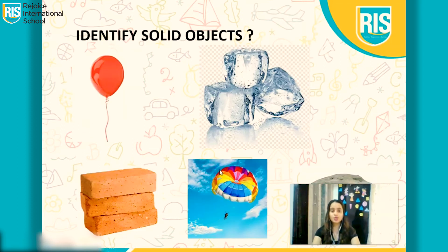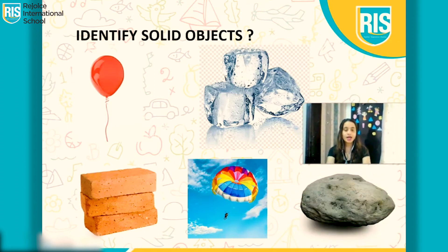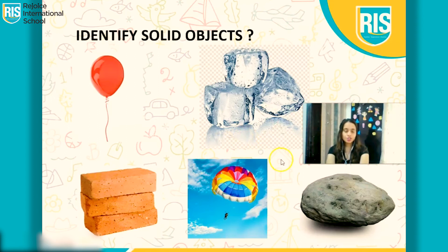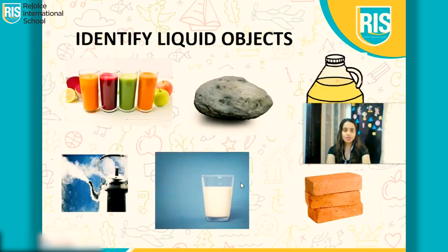Now it's your turn to identify the solid objects. I am going to give you help. It's balloon, ice, bricks, parachute, stone. Can you tell me which are the solid objects? As I told you, they are very firm and stable. They have a specific shape. You can touch and feel it. Your answer is correct — ice cube, brick, and stone. They are the solid objects.